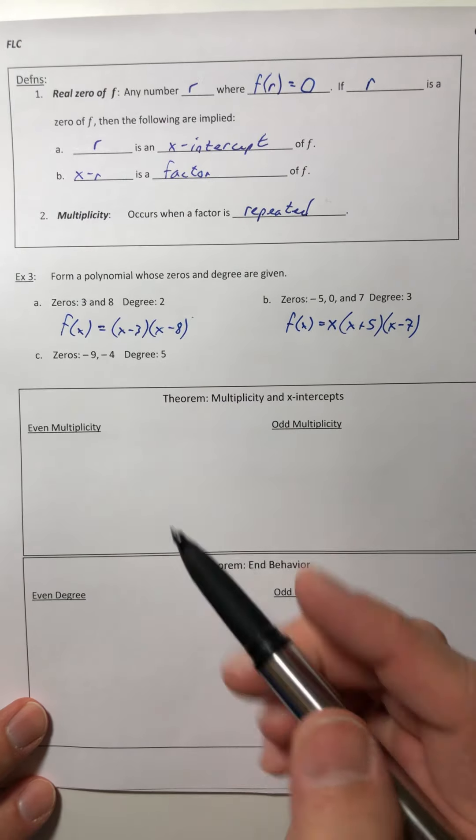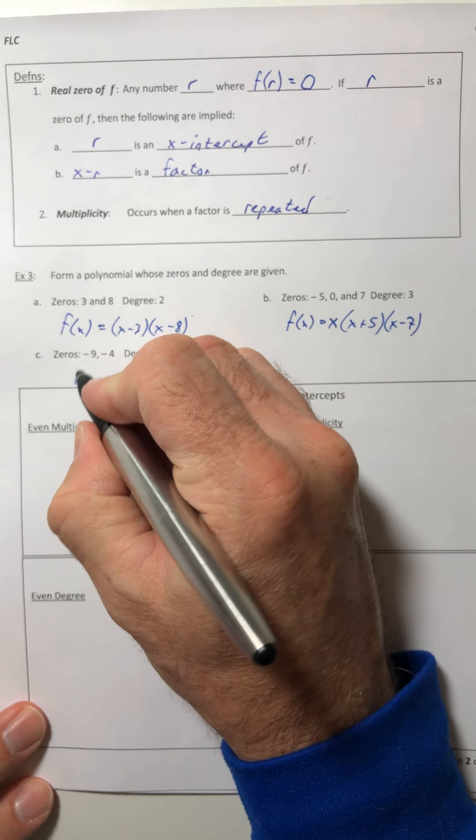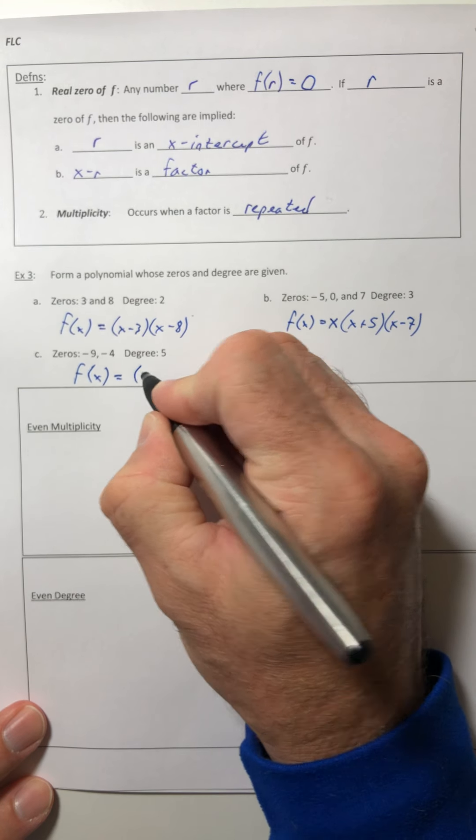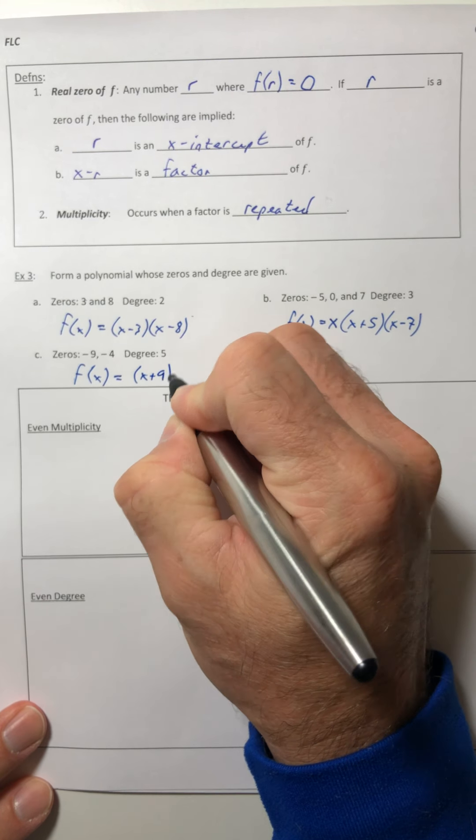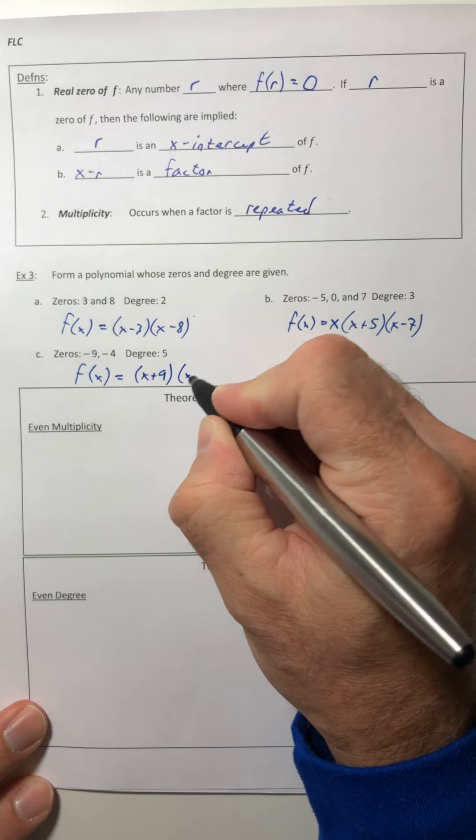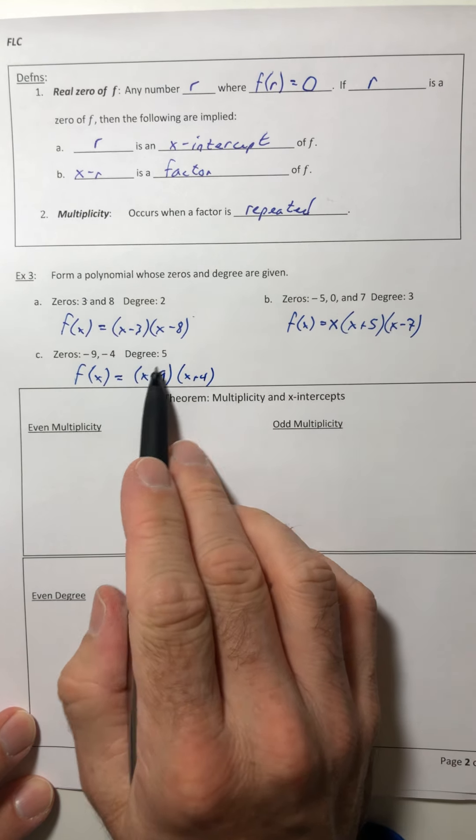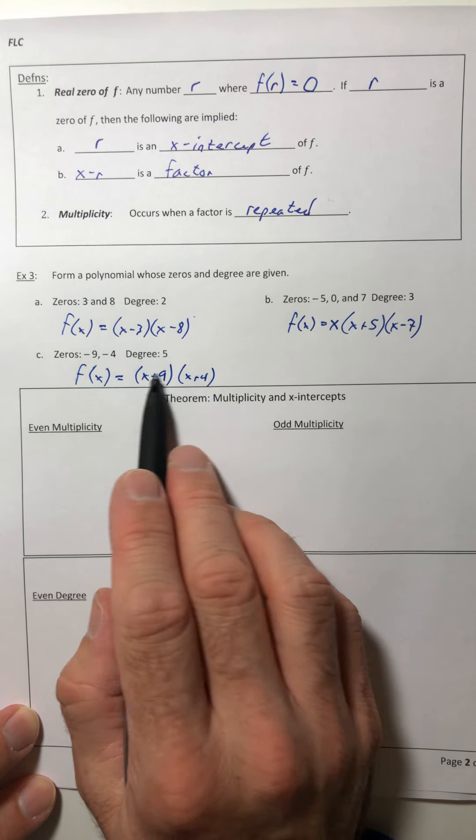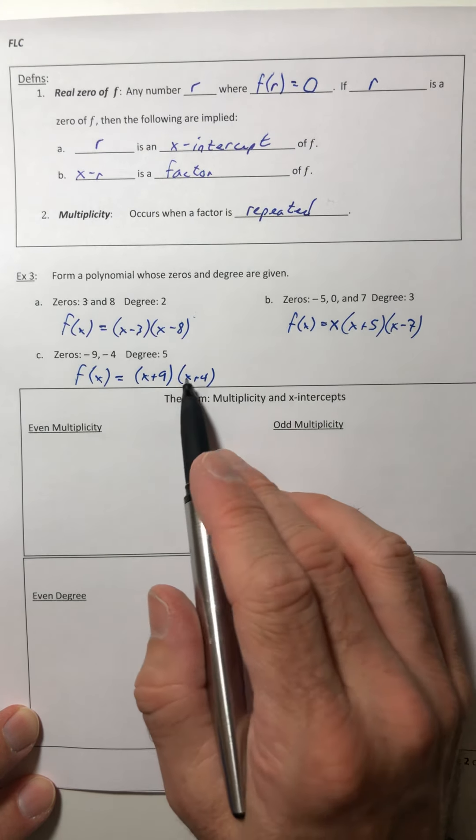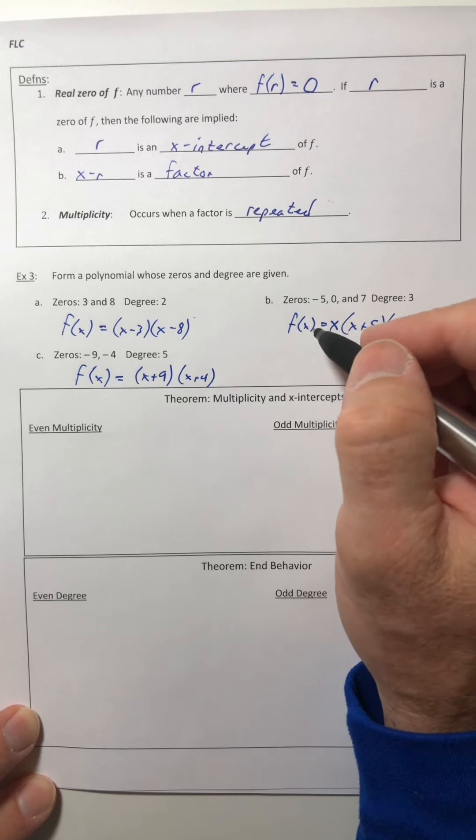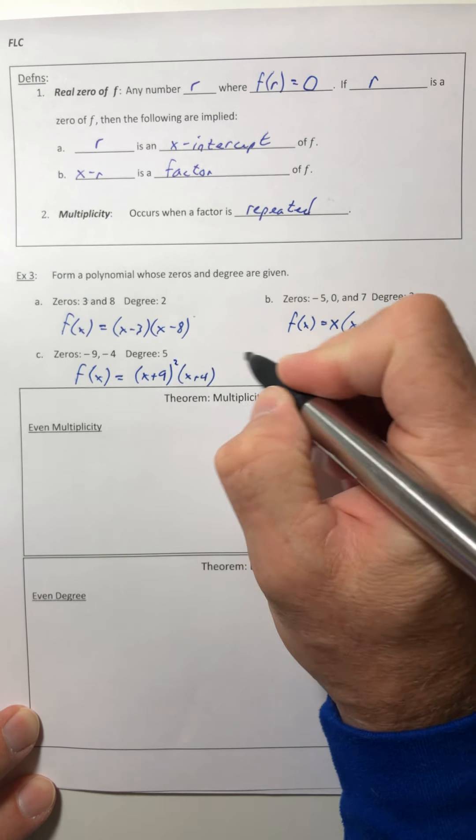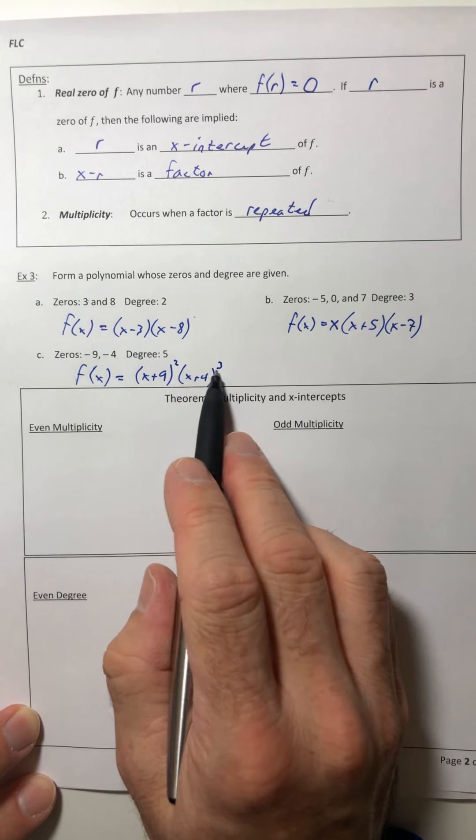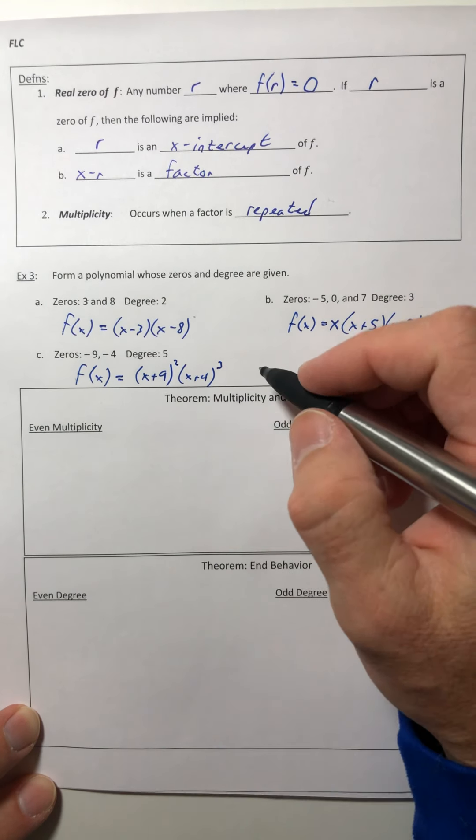All right, so this last one, zero is negative nine and negative four. So that's going to be an x plus nine and an x plus four. But it has a degree of five. So these are the only two zeros. So we're gonna have to put some exponents on these guys to make sure that we have the right degree. So let's put an exponent of two here and an exponent of three. So that gives me a degree of five.